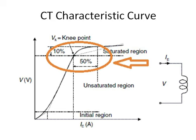This linear portion is the operational area of the CT. For a protection class CT — for example 5P20 — the '20' means up to 20 times its normal rated current the CT will work properly in this linear zone. The '5P' means the accuracy class is 5%. After this knee point, the CT will get saturated and will not work properly.